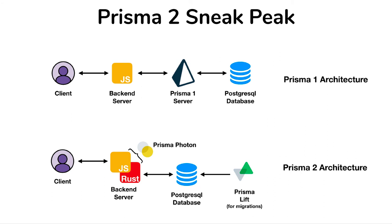We will now take a tour of Prisma 2, which will include creating a new demo project using a SQLite database. We'll show how we can apply migrations to that database and how we can create new posts and update them. Then we will show how we can transition this code over to a MySQL database in RDS on Amazon and connect to that one. So let's get started.